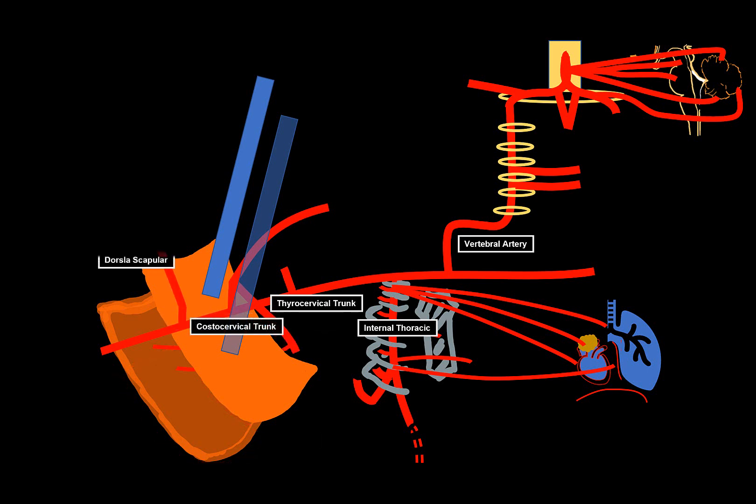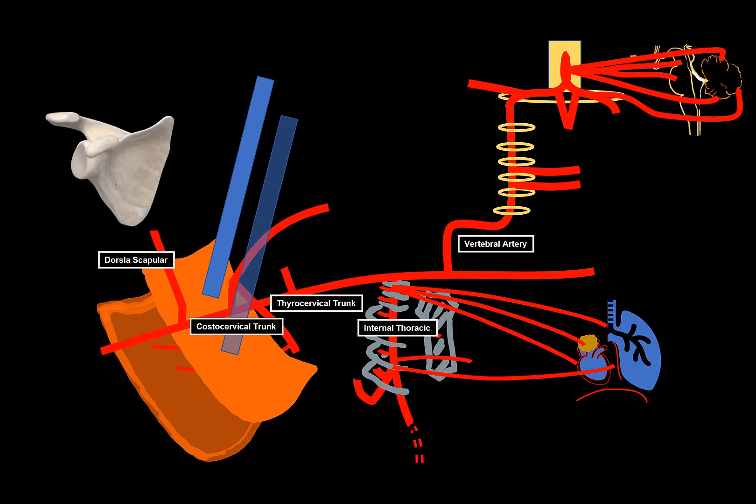The last branch is the dorsal scapular. As mentioned, in some people it is a side branch of the transverse cervical artery of the thyrocervical trunk, while in other people it arises directly from the subclavian artery itself, on the lateral border of the anterior scalenus muscle. That's all for the subclavian artery.